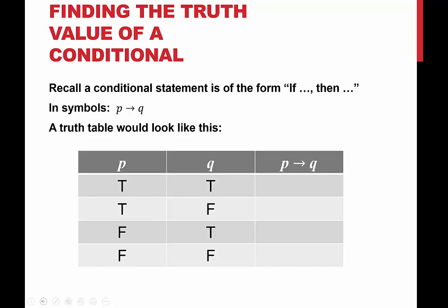So we might recall one of two ways that we can remember the truth value of a conditional. Either the conclusion is true — the conclusion is the second part, so this is the conclusion and this is the hypothesis — or the hypothesis, the first part p, is false. So we call this the hypothesis, and q is the conclusion. For a conditional statement to be true, either the hypothesis is false or the conclusion is true.